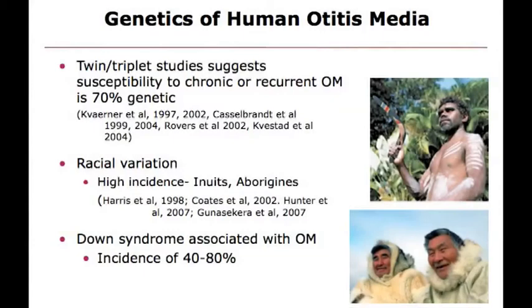So there's a big question: what causes otitis media? Why do some people get it and get over it, and others have it for the rest of their lives and have to go through multiple rounds of surgery? Human twin studies are one way of looking at the effect of genetics, because twins are genetically identical — if they both get the same disease there's probably quite a strong genetic component. The estimate from lots of human studies was about a 70% genetic component.